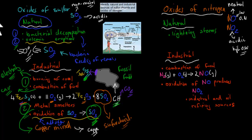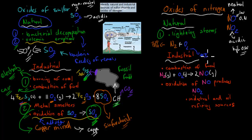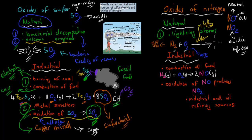Nitrogen monoxide gets produced naturally mainly through lightning storms. We have lots of N2 molecules — 78% of our atmosphere is nitrogen — and about 21% is oxygen. These gases float around together normally without reacting. But if we have a lightning storm, the lightning produces so much energy that it breaks the bonds between nitrogen and oxygen and forms new molecules called nitrogen monoxide. These nitrogen oxides are problematic themselves, and they can also produce nitrogen dioxide.